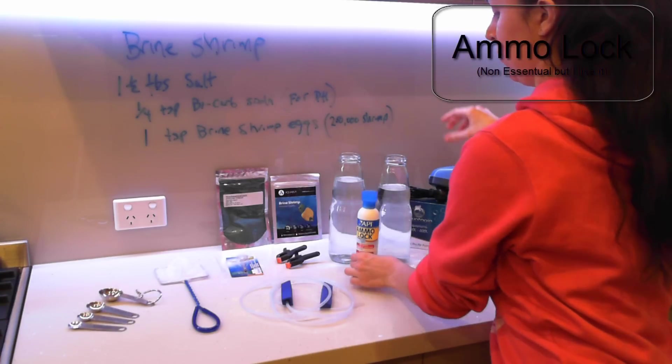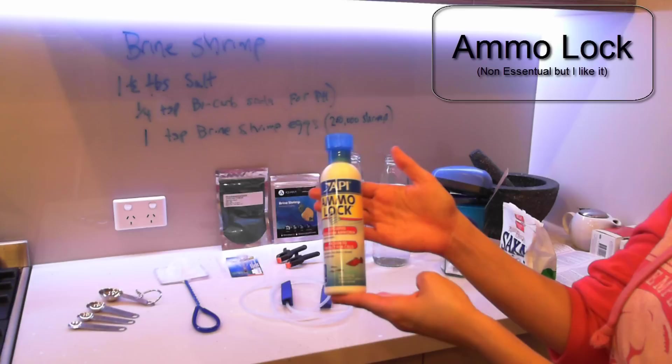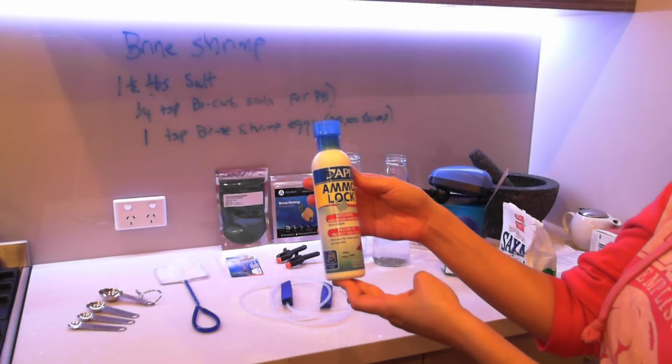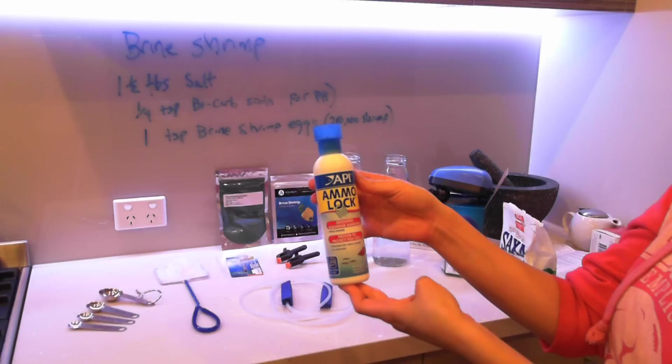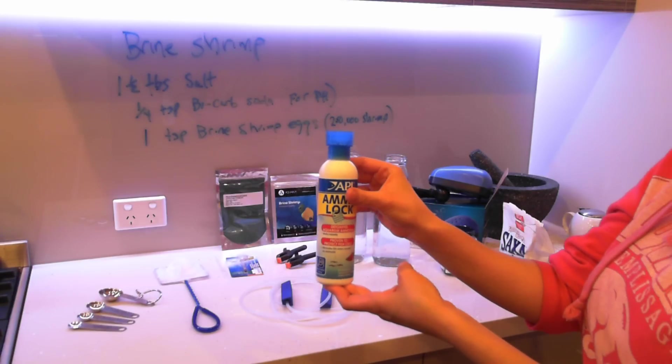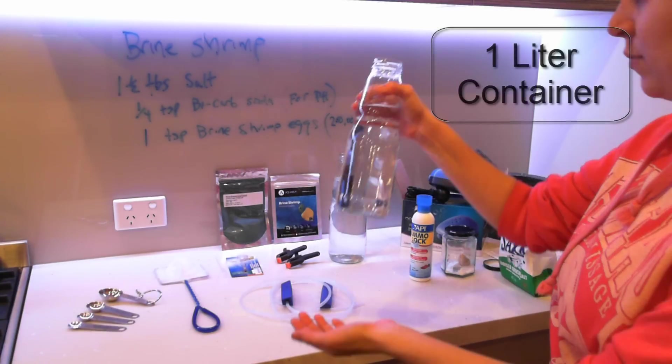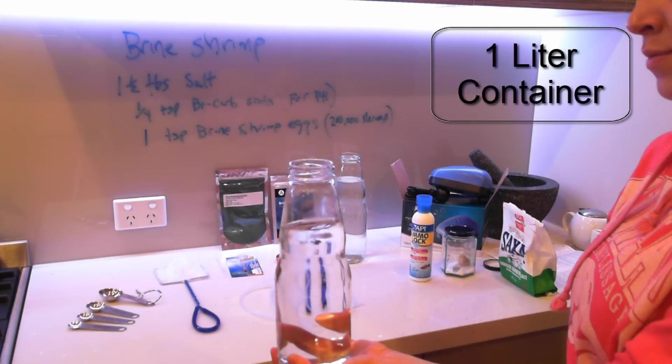I'm also using AmmoLock. I just add this in because it takes away the ammonia, and since we're going to be raising them to adulthood, that's just a bit of a concern because they will be fouling up the water a little bit, so we're just getting a jump start on that. I also am using one liter containers. I have two there.